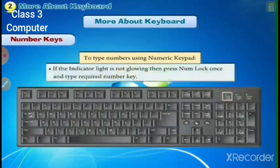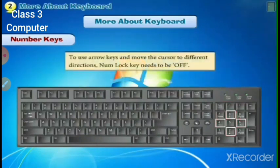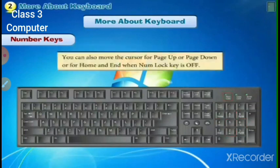If the indicator light is not glowing, press Num Lock once and then type the required number keys. To use the arrow keys on the numeric keypad to move the cursor in different directions, the Num Lock key needs to be off. You can also use Page Up, Page Down, Home, and End keys when Num Lock is off.